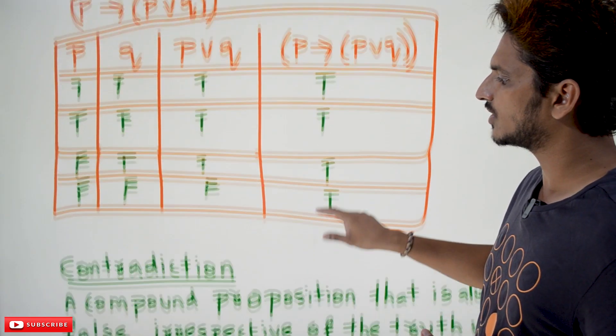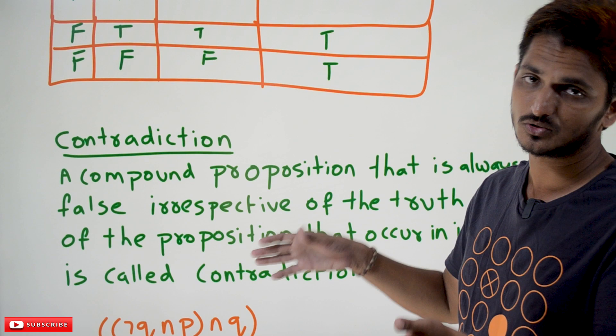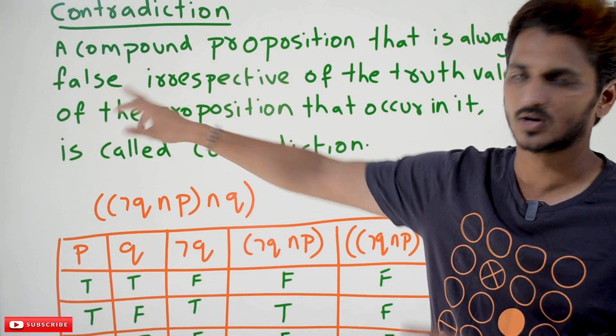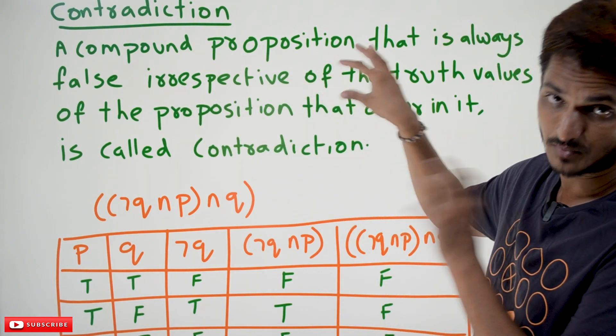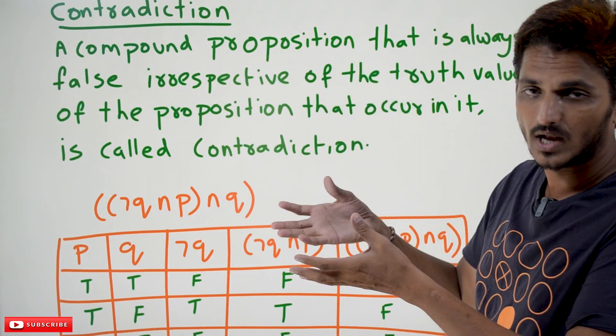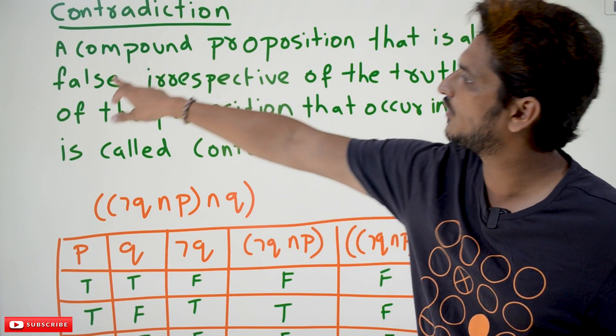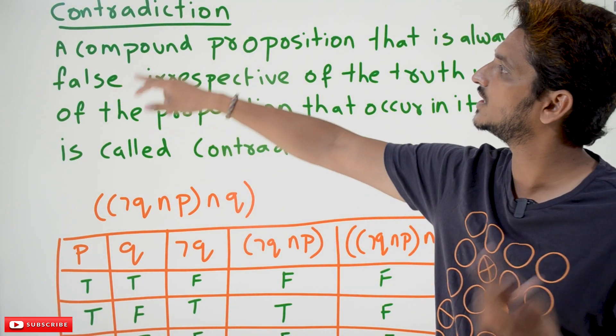Now coming to the next statement: contradiction. Exactly opposite to tautology. A compound proposition that is always false. Whatever the values that are present in the proposition, whatever the truth values are present in the proposition, our final output should always be false. Then we say it is a contradiction.